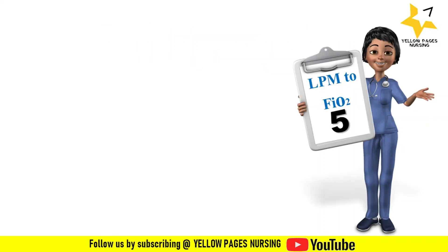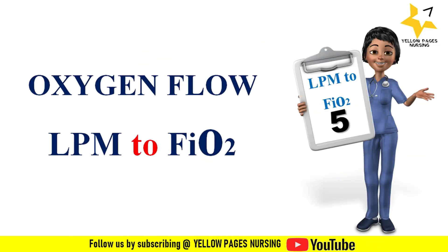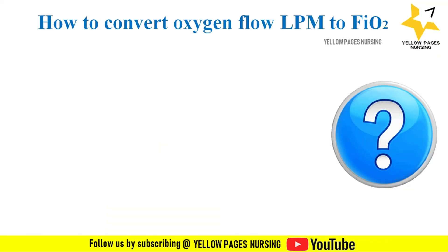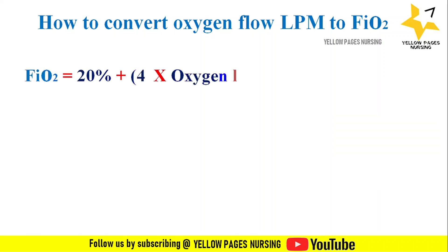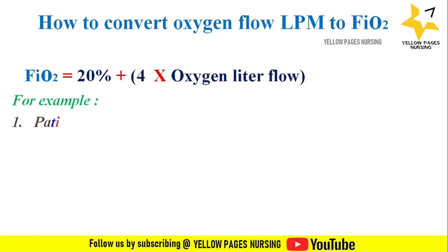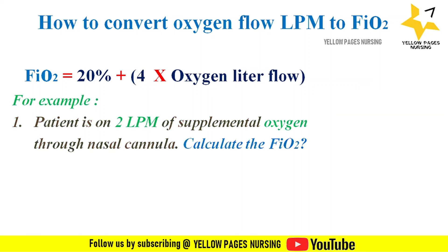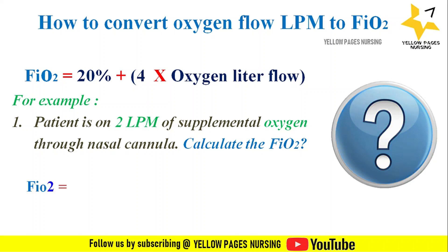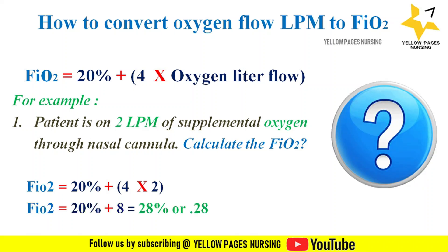Next comes calculation of oxygen flow — converting liters per minute to fraction of inspired oxygen (FiO₂). The formula is: FiO₂ = 20% + (4 × oxygen liter flow). For example, a patient is on 2 liters per minute of supplemental oxygen via nasal cannula. FiO₂ = 20% + (4 × 2) = 28%, or 0.28.